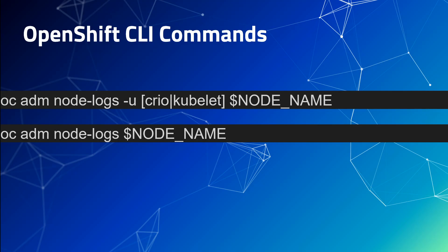With the help of OC CLI, instead of logging into the node you can use the oc adm node-logs command to pull out the logs of that node. All you need to do is give the oc adm command with node-logs and the node name and it will give you the node log. If you want to restrict it to a specific systemd unit, you just specify it with the -u flag — for example, getting the logs of the CRI-O container runtime or the kubelet.